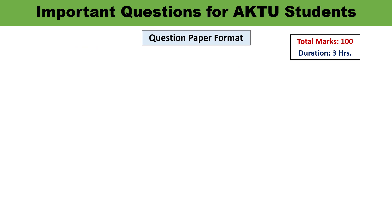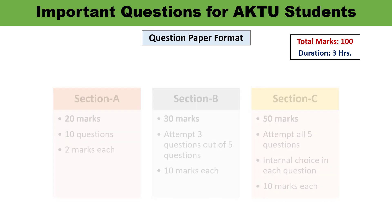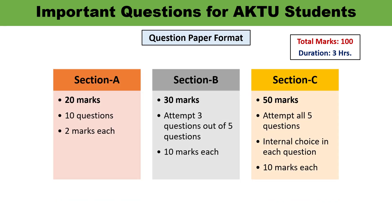Let me tell you about the question paper format. Your question paper will be of three hours duration and total marks will be 100. There will be three sections. Section A will be of 20 marks. In Section A, there will be 10 short questions of 2 marks each. There is no choice — you have to attempt all the questions.